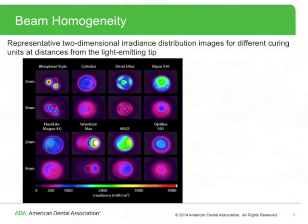Representative two-dimensional irradiance distribution images from different curing units at distances from the light emitting tip show that irradiance is not homogeneous across the light beams of the different LED curing units. The most homogeneous beam comes from the Optelux 501, which is a tungsten halogen curing unit. Single irradiance values reported in product literature for LED curing units can make it seem like the irradiance power emitted from a curing unit is uniformly distributed across its light beam; however, these images show that that is clearly not the case.